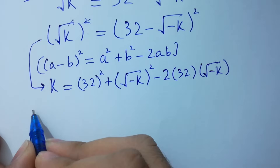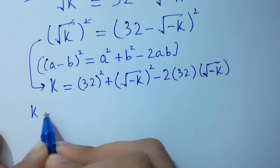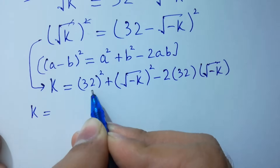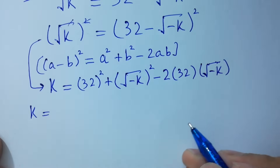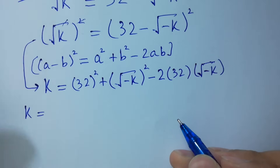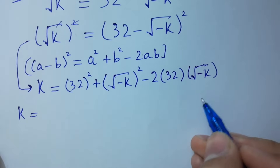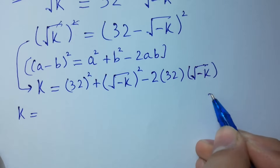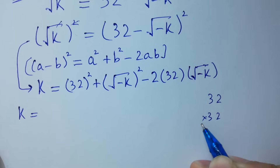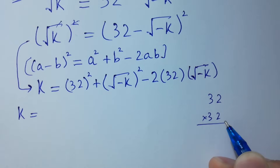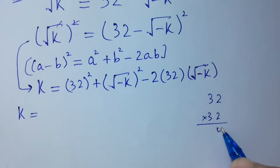k equals 32 times 32. So 32 times 32: 2 times 2 is 4.